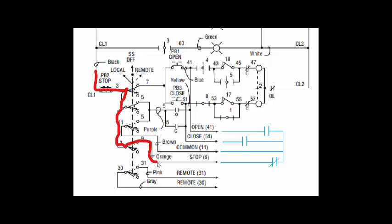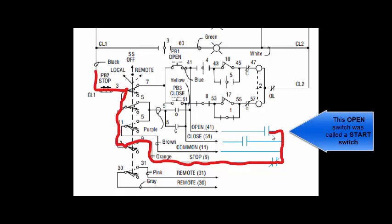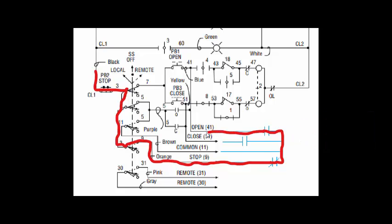When we're in remote that brings voltage out on this orange conductor to the normally closed remote stop switch. Assuming that switch is not pressed, contact is made up, the voltage is able to go up to the start switch. Once this start switch is closed, whether through relay or push button, that allows voltage to go all